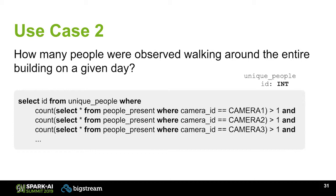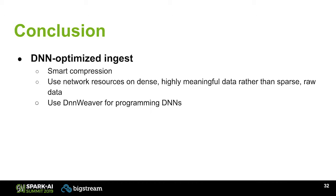In conclusion, DNN-optimized ingest is really the direction things are going. More and more data is coming in, more DNNs are being used, and the number of cameras and their quality is not going to decrease. This is really a type of smart compression — compression is already very common in the big data realm, but this is another level of it. It's using the neural network to find the data you really need, meaning your network resources, power, storage, and processing are spent on condensed, highly meaningful data rather than raw data, which as we know is very sparse.